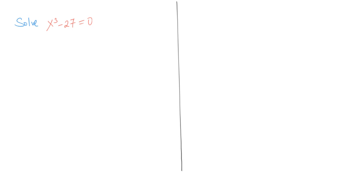Hello viewers, welcome to today's tutorial. In today's video we are going to attempt to solve the equation x cubed minus 27 is equal to zero. What we need to remember is that this is a cubic equation, and being a cubic equation we will end up with three different roots, and out of the three roots one must be a real number.